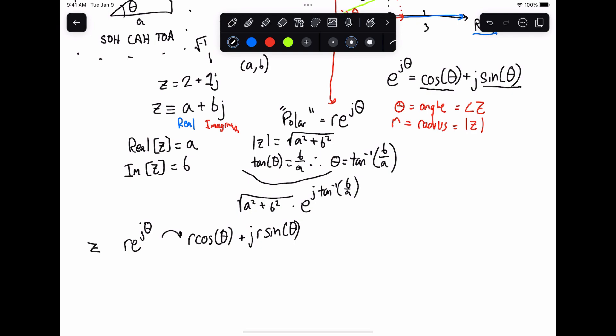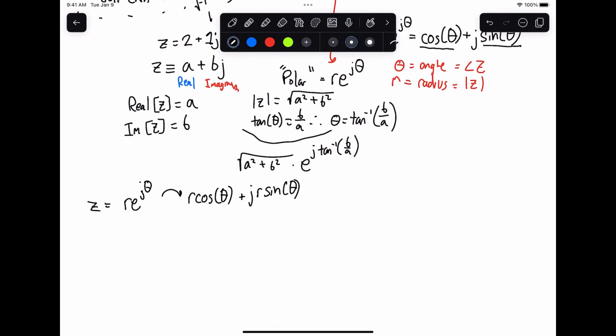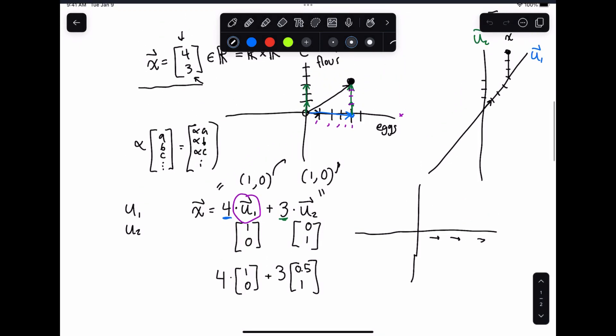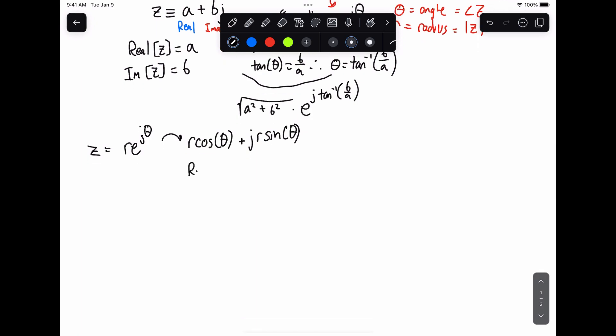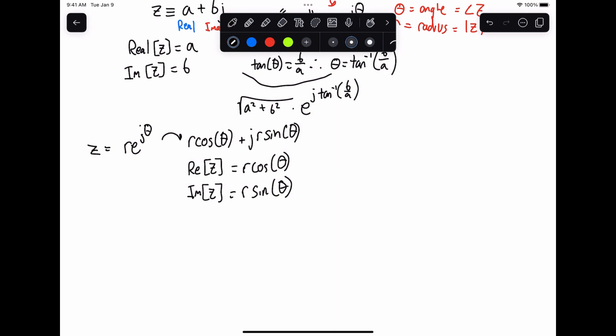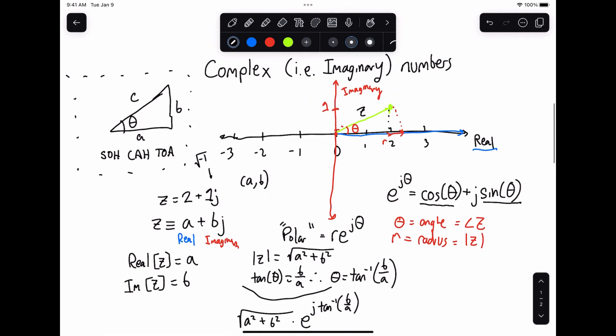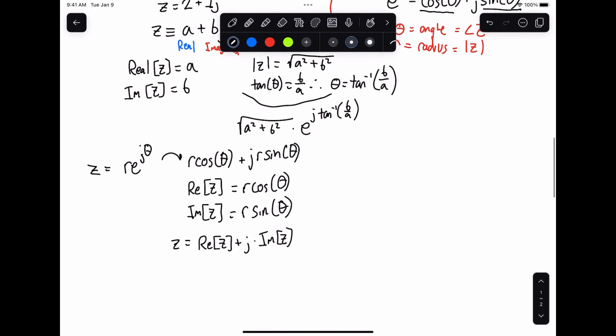In other words, if we have a complex number z in this form, what we can do is say the real part of z is simply equal to r cosine of theta. And the imaginary part of z is just equal to r sine of theta. Notice how we leave out the j because we basically are going to be assuming that we have real numbers, not complex numbers. The real and the imaginary operators simply just return a real number. So z is equal to the real part of z plus j times the imaginary part of z. It's a little confusing, right? Because the imaginary returns a real number. So you multiply by j, but this once again is what you need to have.